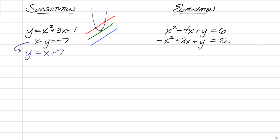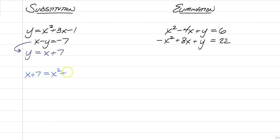I just wanted to show you what type of situation we have coming our way. But again, the point of this video is to show you how to do it algebraically. Since I already got y all by itself, we're just going to substitute x plus 7 into this y. So we're going to have x plus 7 is equal to x squared plus 3x minus 1. Now we are down to one variable — our y has disappeared because we substituted x plus 7 into our y value.